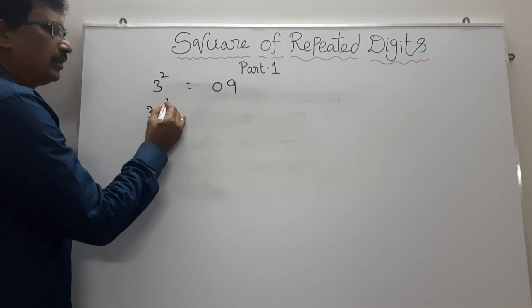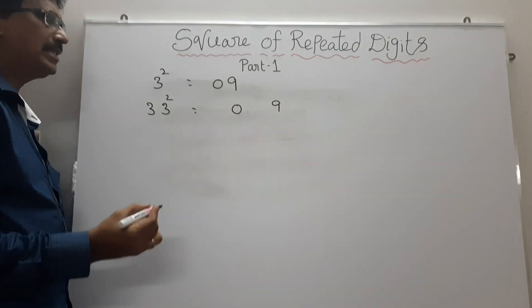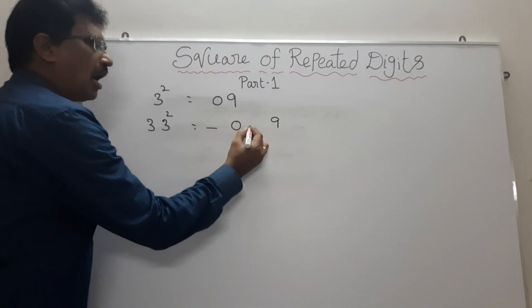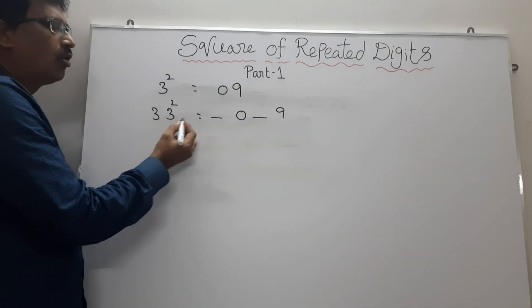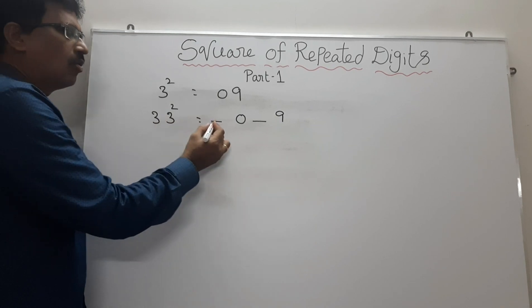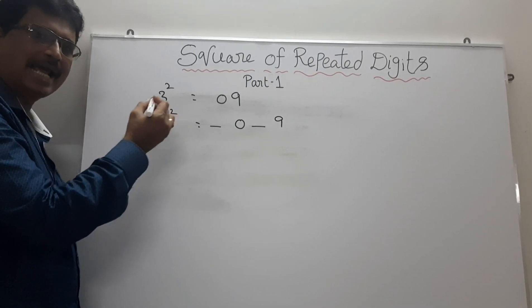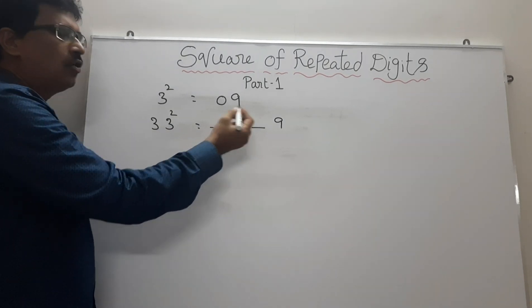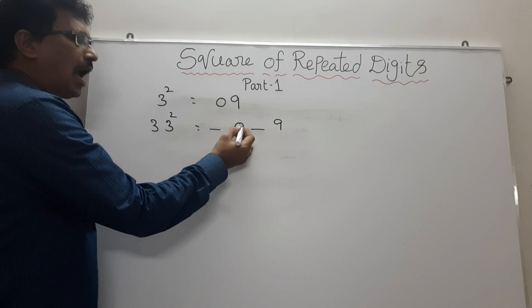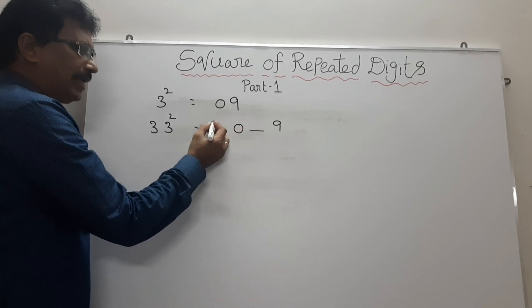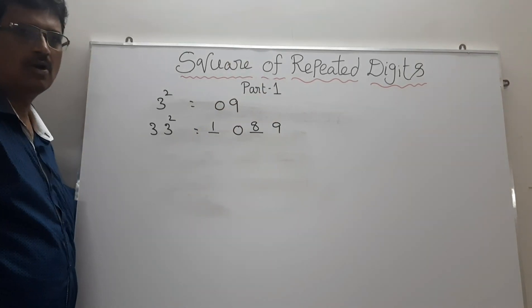Next, 33 squared equals to — here, how many 3's are there? Two 3's. First, we write 09. We want to insert 1 blank before 0 and after 0. Why we use 1 blank? That means here there are 2 digits, so we are inserting 1 less than the number of digits — 1 blank before 0 and after 0. Now we want to fill these 2 blanks. Here it is 0, so add 1: 0 plus 1 is 1. Subtract 1 from 9: 9 minus 1 is 8. So 33 squared equals to 1,089.